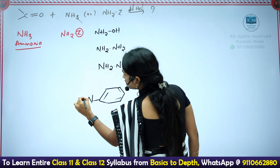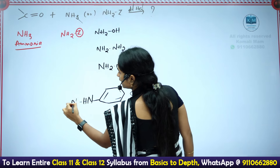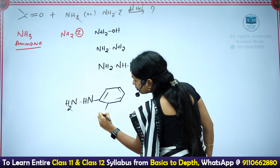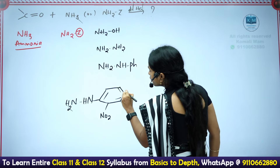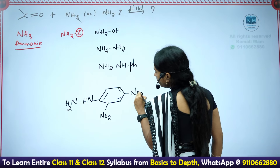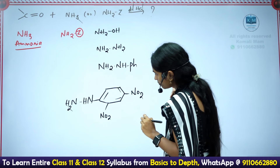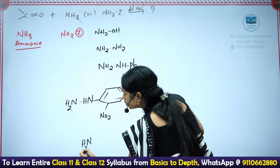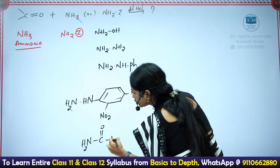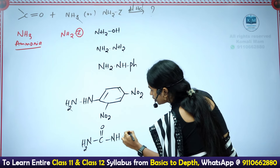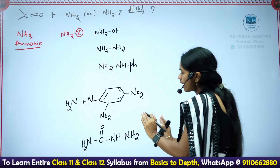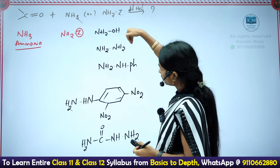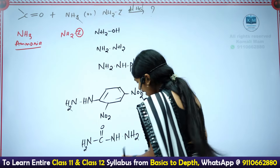Writing the same structure again: placing one NO2 group at the second position and one NO2 group at the fourth position gives 2,4-dinitrophenylhydrazine. Another important derivative is semicarbazide, written as NH2-NH-C(=O)-NH2.